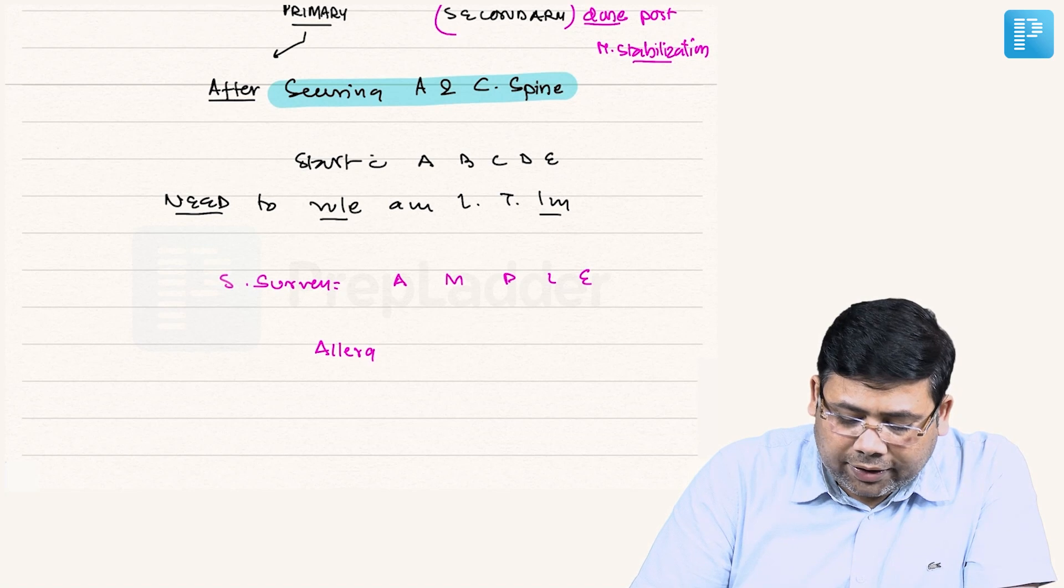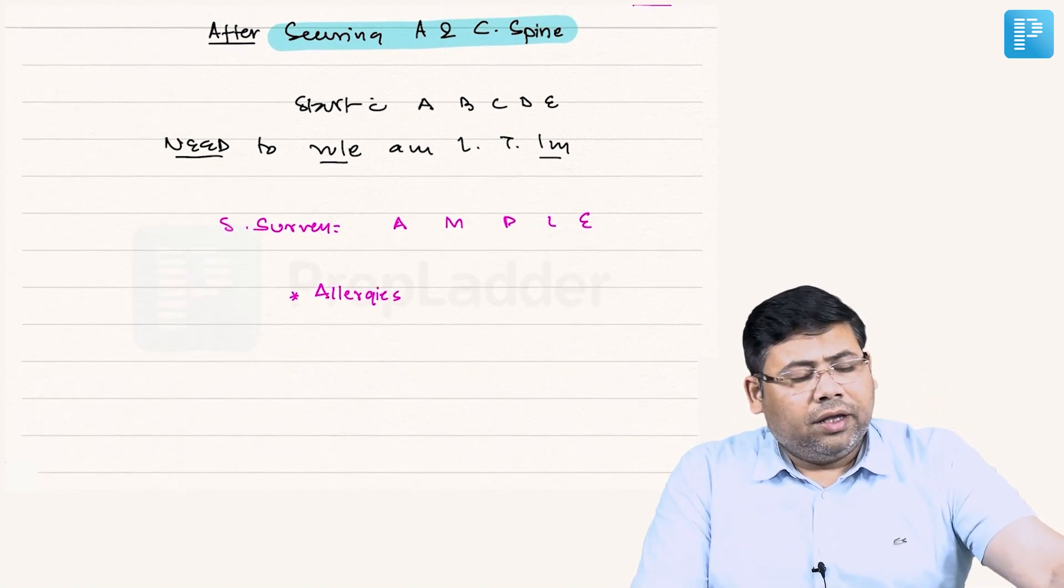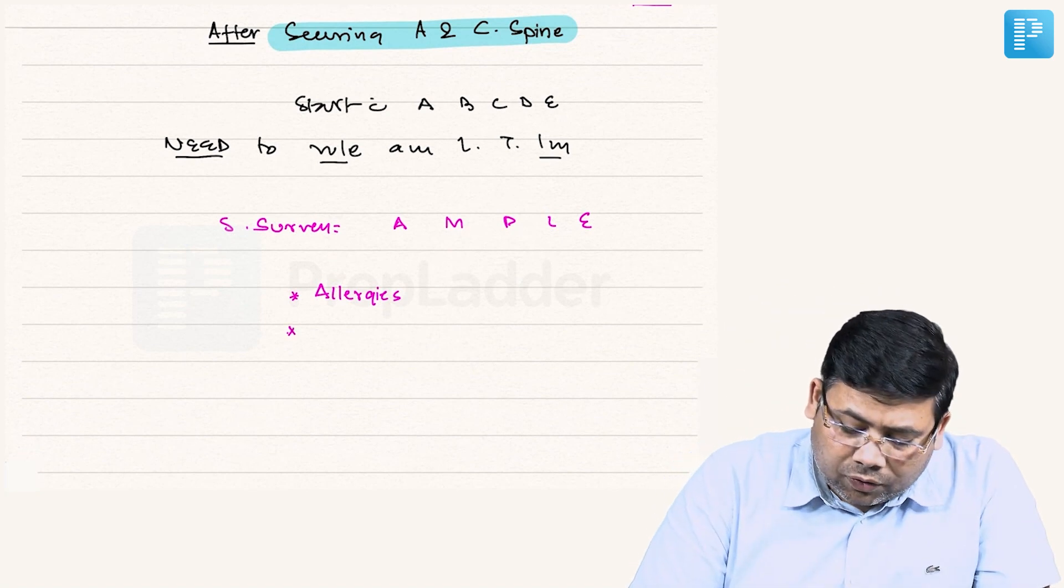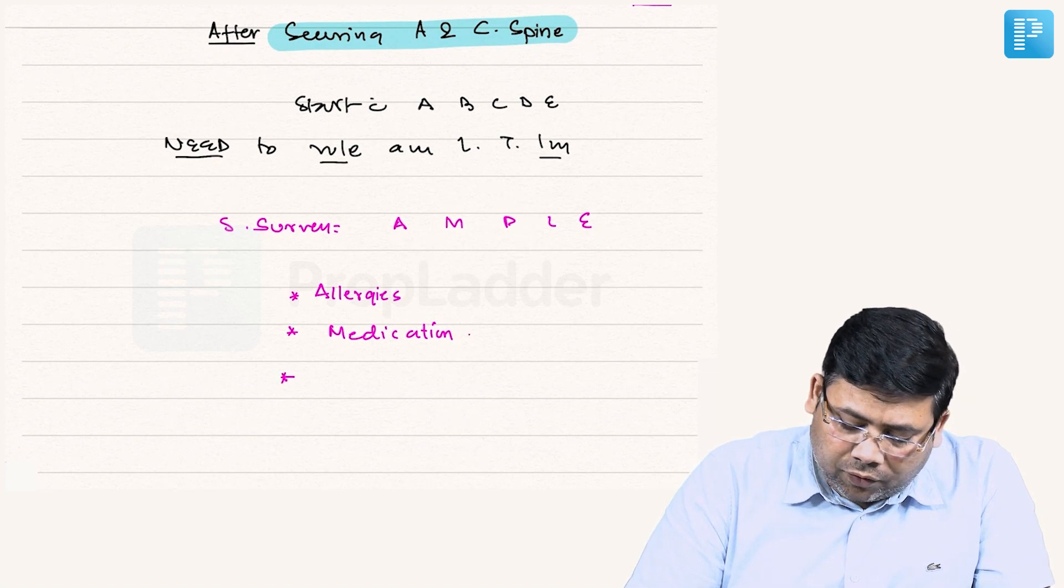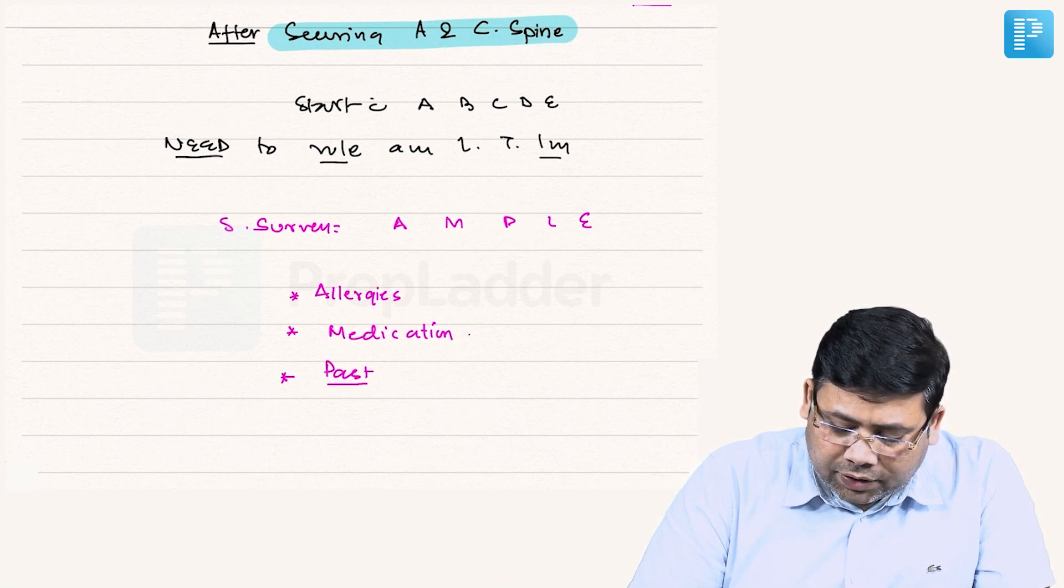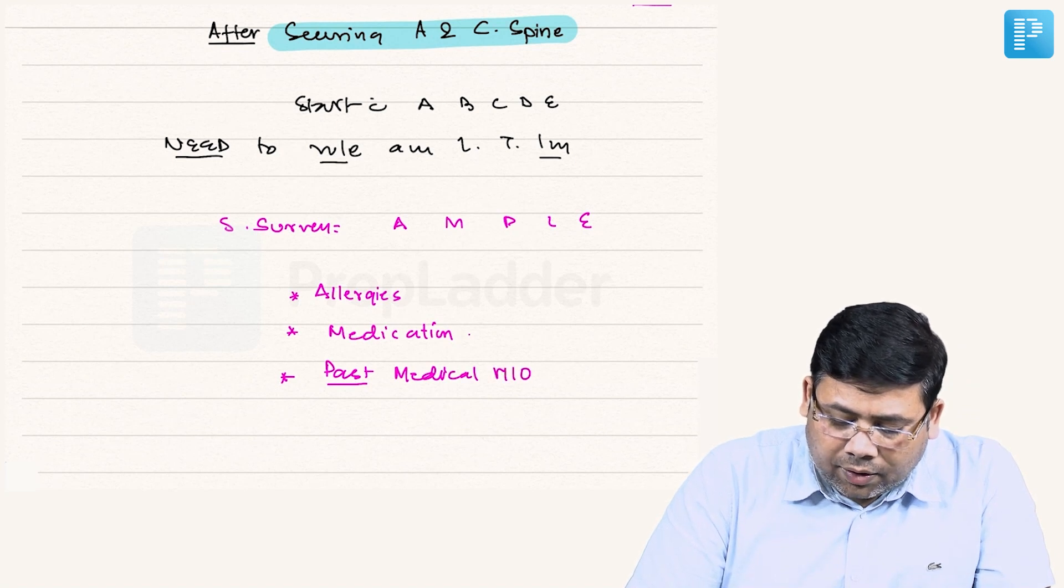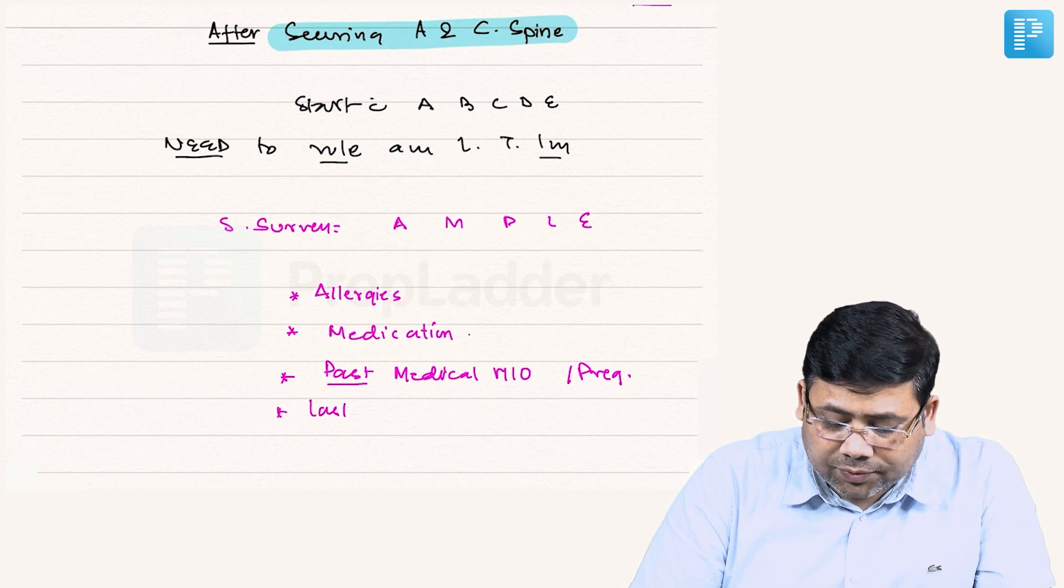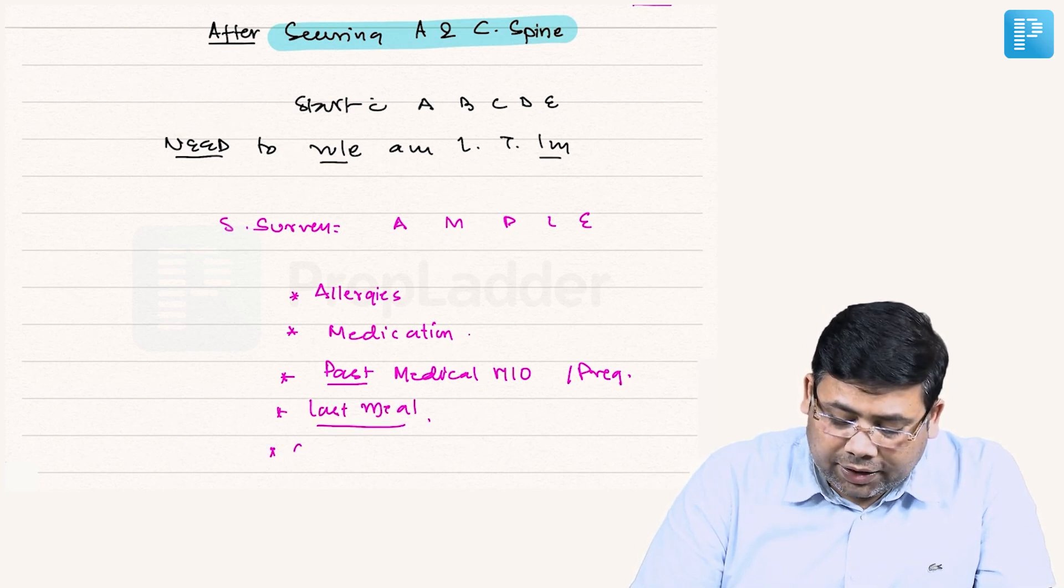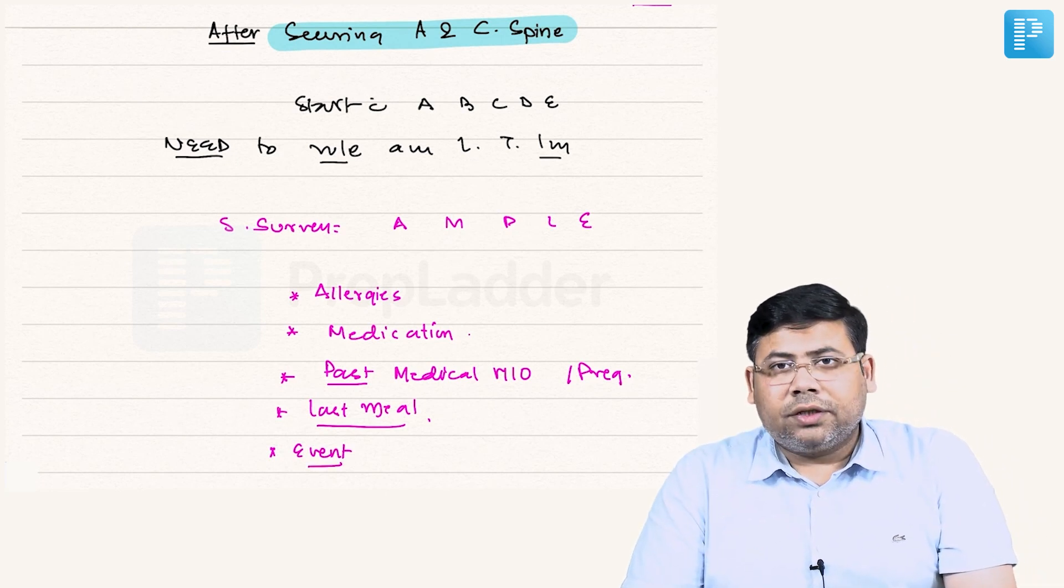A is for allergies—we have to determine whether the patient is allergic to any drug. M for medication. P for past medical history. If dealing with a female patient, pregnancy status. L for last meal, because the patient might require surgical intervention, and E is the event of trauma. So this is how we approach these patients.